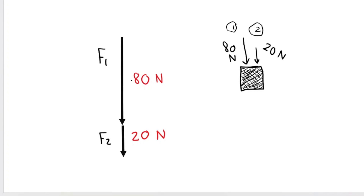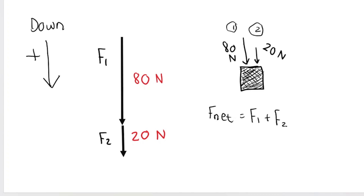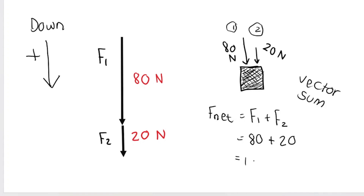We need to choose a positive direction. Because both vectors are pointing down, I'll choose down as my positive direction — indicate this with an arrow on your page. To work out the net force or resultant vector: F net equals F1 plus F2. We always start off with plus because of vector sum. F1 is going down, and down is my positive direction, so it's positive 80. Plus F2 is also going down — positive 20. 80 plus 20 is 100 Newtons downward. Don't forget your units and don't forget your direction.